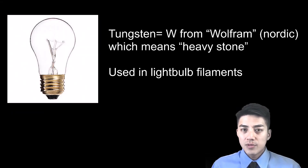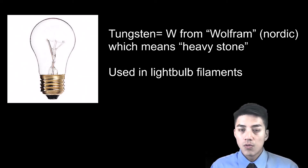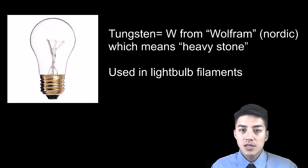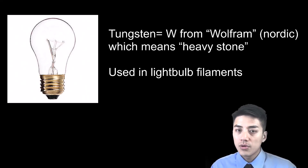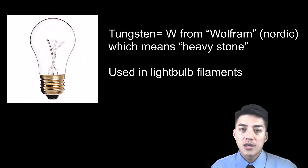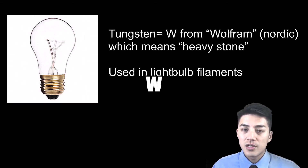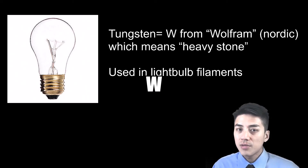Tungsten is W because it's derived from the Nordic word wolfram, which means heavy stone or heavy metal. Tungsten is also used in light bulb filaments, and how I remember it is it kind of looks like a W if you look at the filament carefully enough — that's the shape of it, a W. Tungsten.